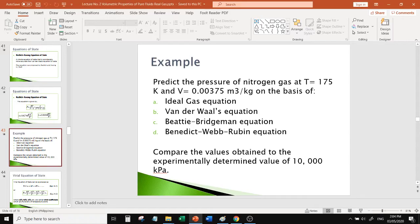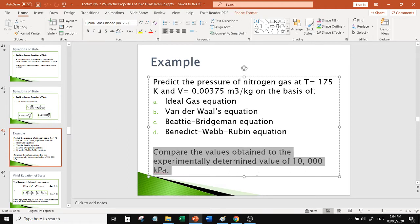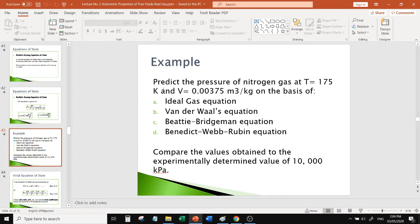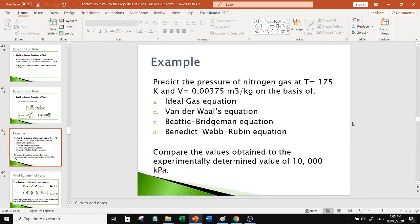Okay, for this video we will solve examples on the equations of state. This is the example: predict the pressure of nitrogen gas at T equals 175 Kelvin and V equals 0.00375 meter cube per kilogram. We need to apply the different equations of state - the ideal gas equation, Van der Waals equation, Beattie-Bridgeman, and Benedict-Webb-Rubin equation. We need to compare the values obtained with the experimental value.